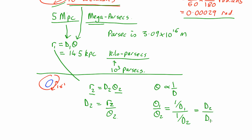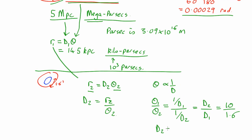Which in this case is, we know the ratio of angles is 10 over 1.6. So D2 is 10 over 1.6 times D1.